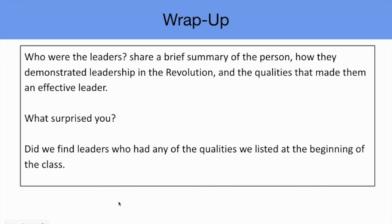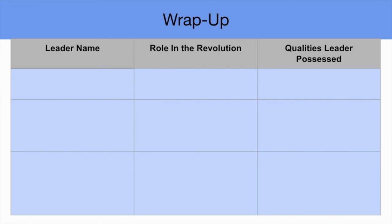For the wrap-up, we'll ask students to present their findings: who were their leaders? We'll ask students to share a brief summary of the person, how they demonstrated leadership in the Revolution, and the qualities that made them an effective leader. You can have a conversation with your class about what surprised them — did we, as a class, find leaders who had any of the qualities we listed at the beginning of class? As students are responding and presenting, students can chart along with you recording their responses on this graphic organizer, or by recreating it in their Social Studies notebook.